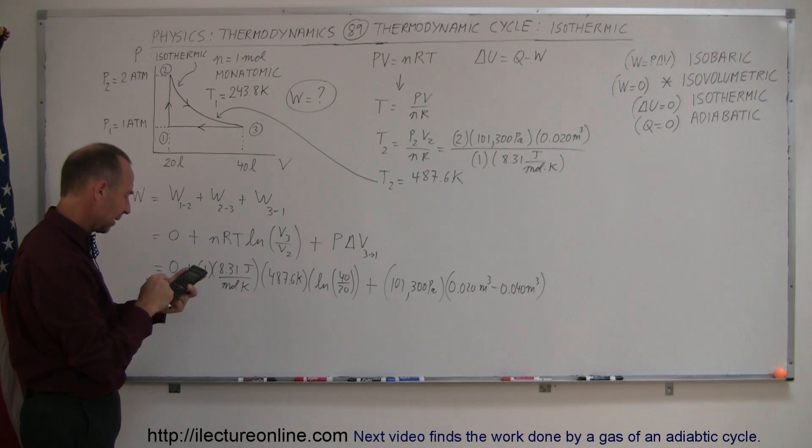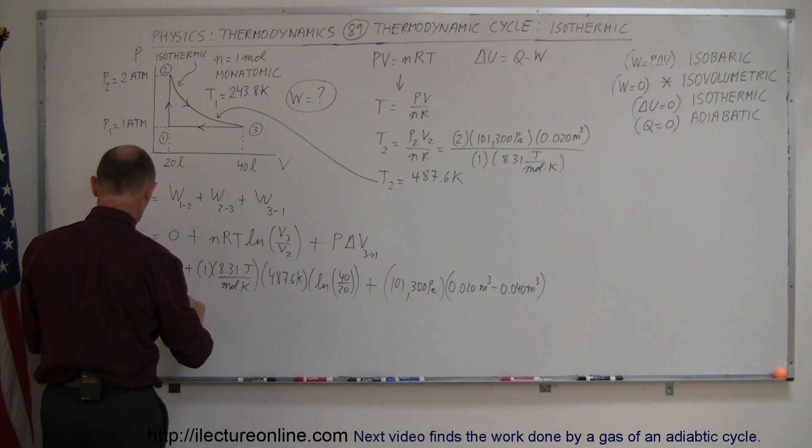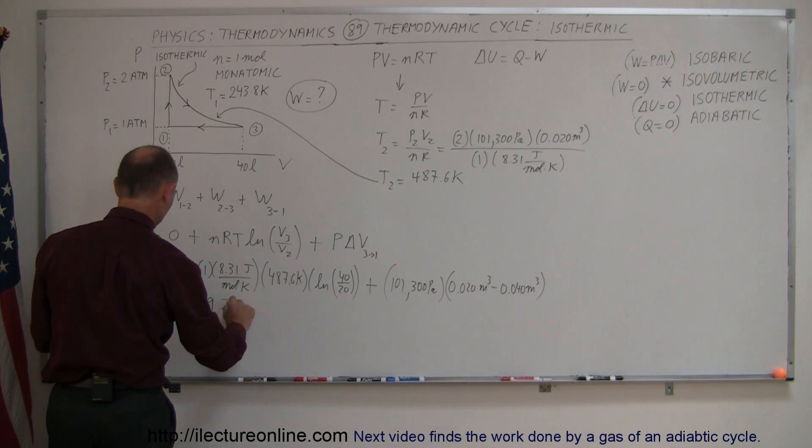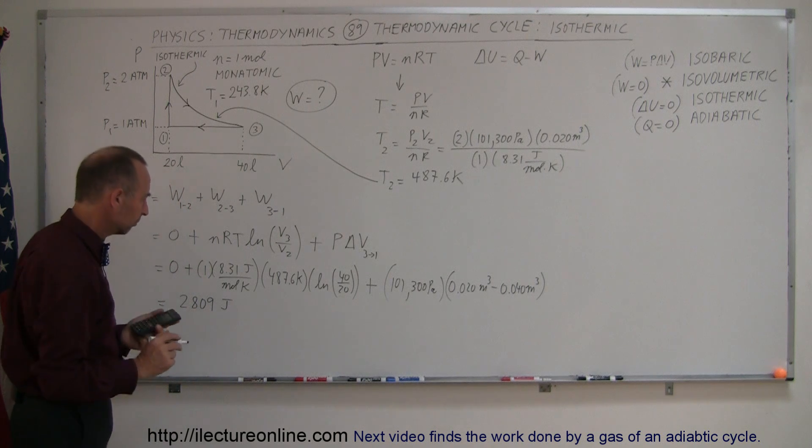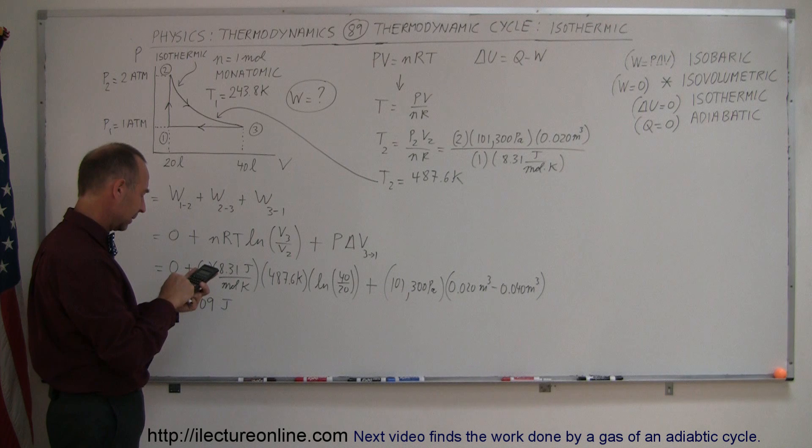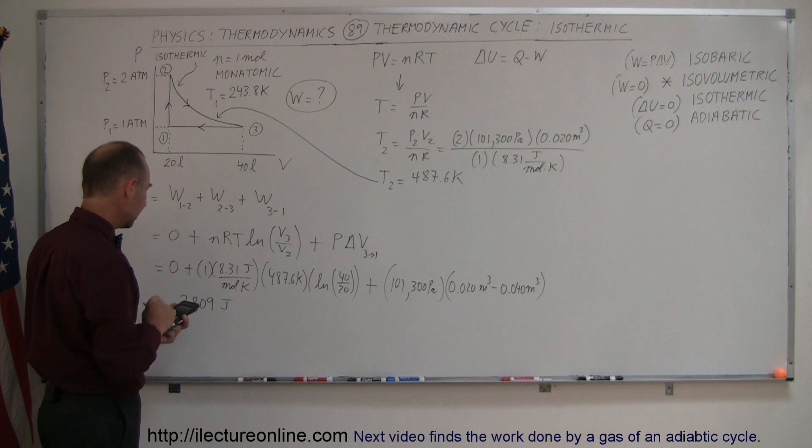So we multiply that times 2, take the natural log of that, equals, times 8.31 equals, and so we have this is equal to 2,809 joules. Let me work that out just again, so 2, take the natural log, times 487.6, times 8.31 equals 2,809 joules.